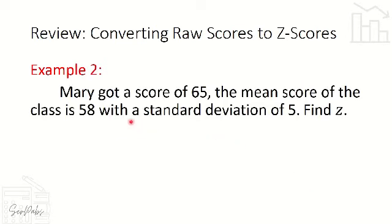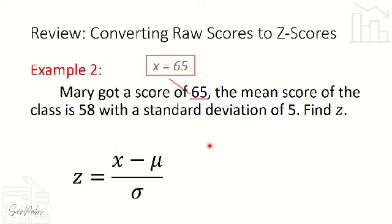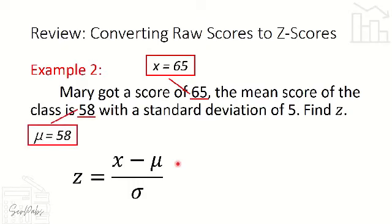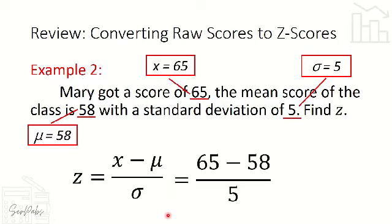Example number 2: Mary got a score of 65. The mean score of the class is 58 with a standard deviation of 5. Find z. Converting the raw score of 65: using the formula, we substitute (65 - 58) / 5, and that will be equal to 1.4.